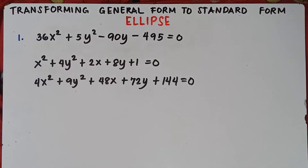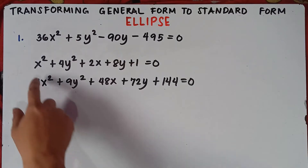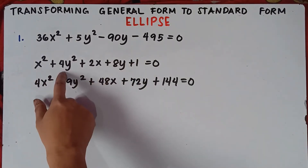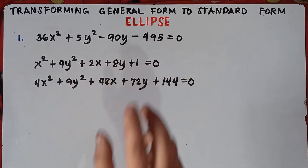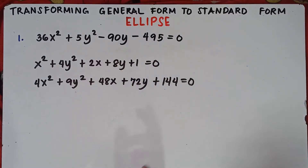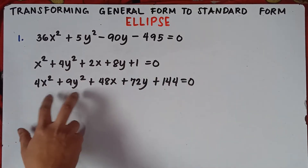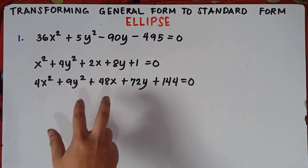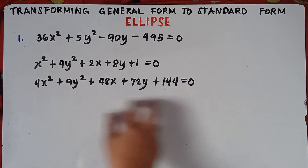This is actually Part 3 of our video class, requested from one of our subscribers and followers to answer this kind of equation. In Part 1, we answered x squared plus 4y squared plus 2x plus 8y plus 1 equals 0 — feel free to see the link in the description below. Part 2 is also linked in the description below.